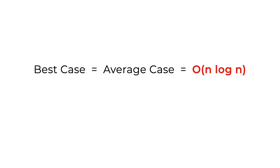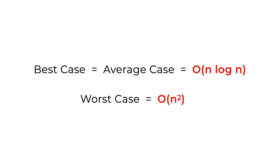For the time complexity of this algorithm, the best case and average case is O(n log n). If you want me to explain where the log n comes from, comment below and I'll consider making another video. However, contradicting its name, the worst case is actually O(n²). What constitutes the worst case depends on how you choose the pivot. If the pivot is chosen from the rightmost element, the worst case is a reverse-sorted array; if from the leftmost, the worst case is an already sorted array.